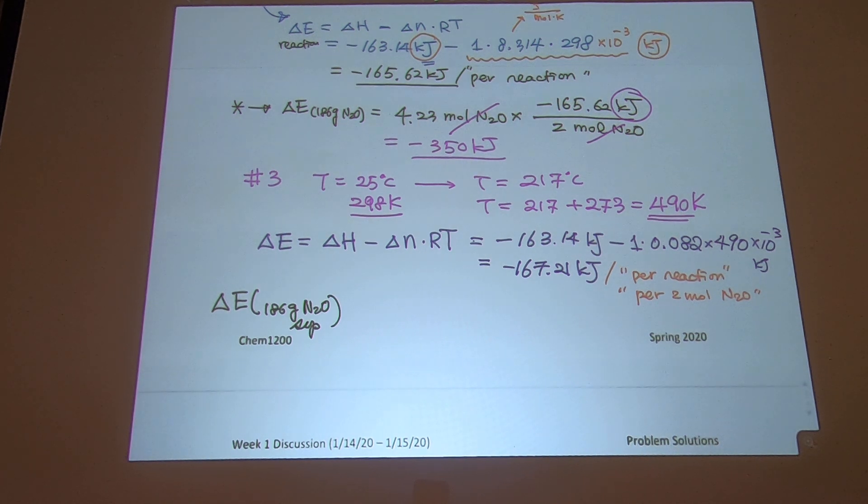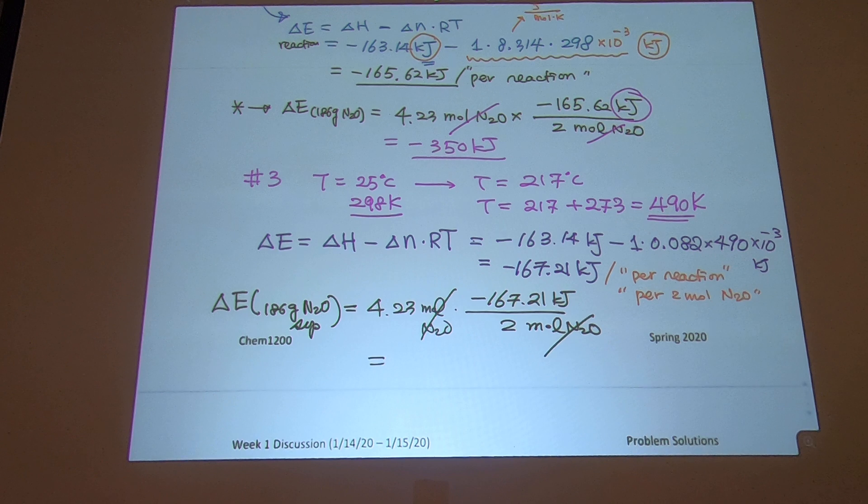And that is essentially 4.23 mole, then minus 167.21 kilojoule, and then 2 mole. That goes away and this turns out to be minus 354.1 kilojoule.